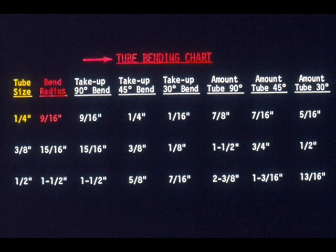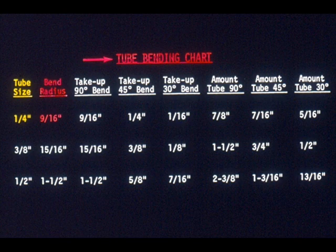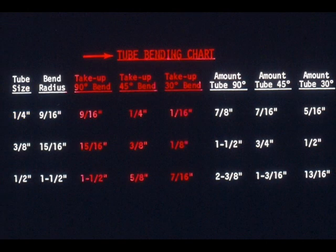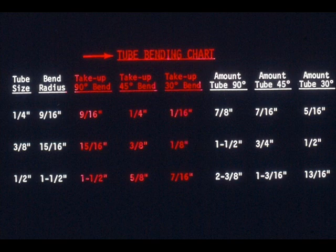The next column covers bend radius. The radius for any degree bend will always be the same for the same size tube. In other words, if you're bending a quarter-inch tube, the bend radius will always be nine-sixteenths of an inch. The third, fourth, and fifth columns list the amount of take-up for the three primary bends: ninety degrees, forty-five degrees, and thirty degrees.